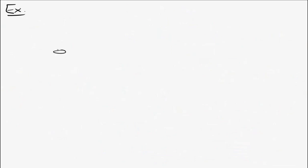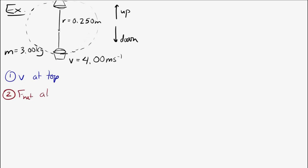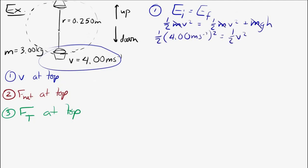Next example: a bucket of water swung in a vertical circle so none of the water falls out even when it's upside down. At the bottom of the loop it's moving at 4 meters per second. The loop has a radius of 0.25 meters, and the bucket's mass is 3 kilograms. Using energy conservation — assuming a closed system — with kinetic energy at the bottom and kinetic plus potential energy at the top, the mass cancels and the speed at the top is 2.49 meters per second.